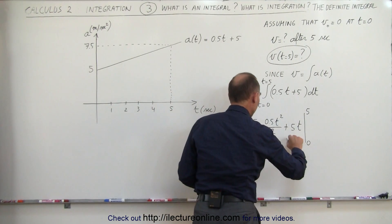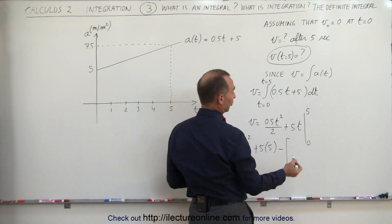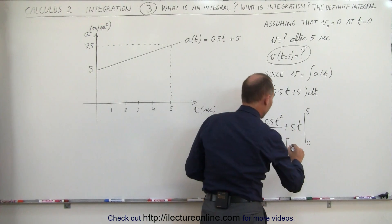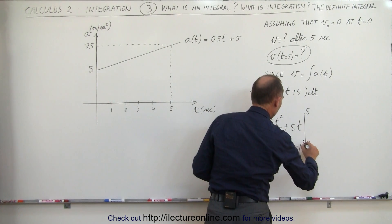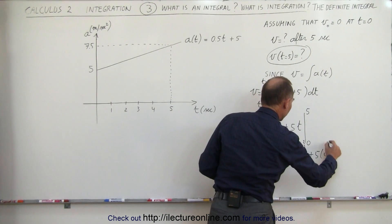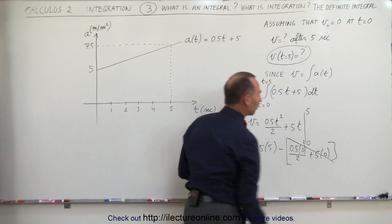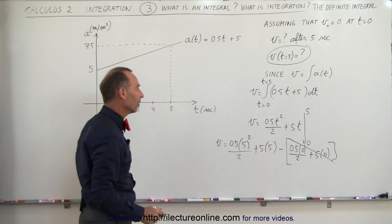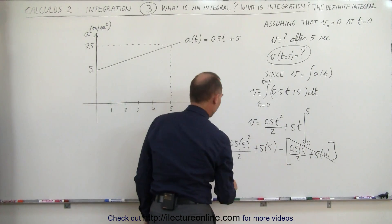Of course, you can see when I plug in the 0 there, I get 0.5 times 0 squared, divided by 2, plus 5 times 0, and of course, that simply disappears because 0 times anything is 0, and this would then be the result of our integral.